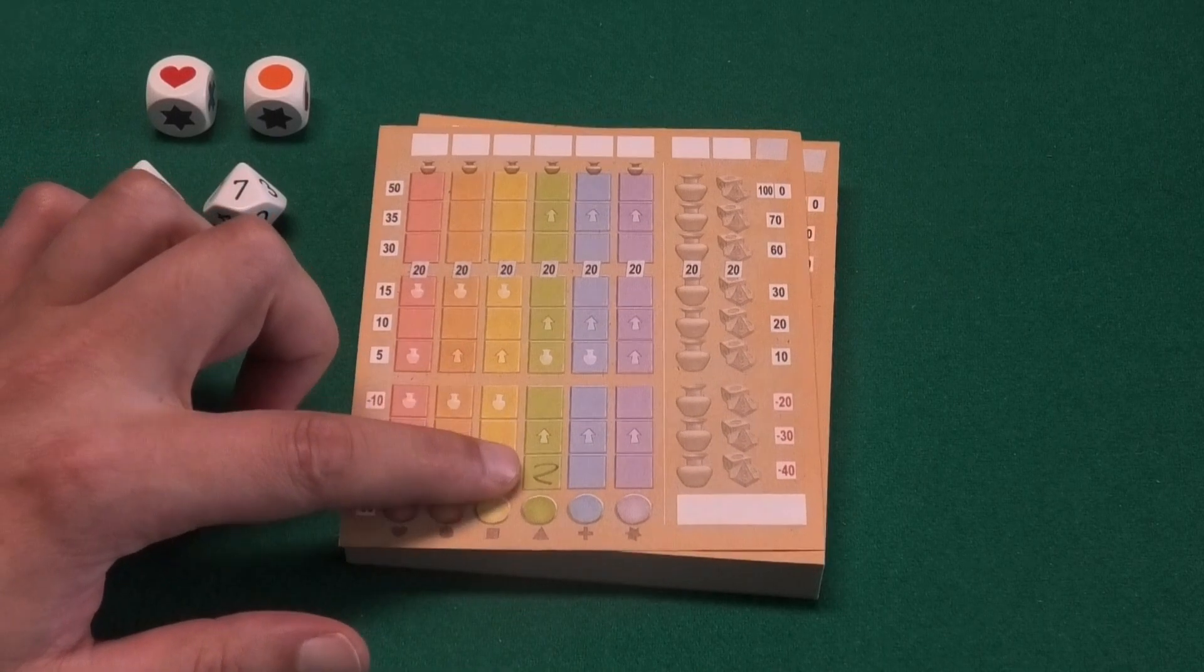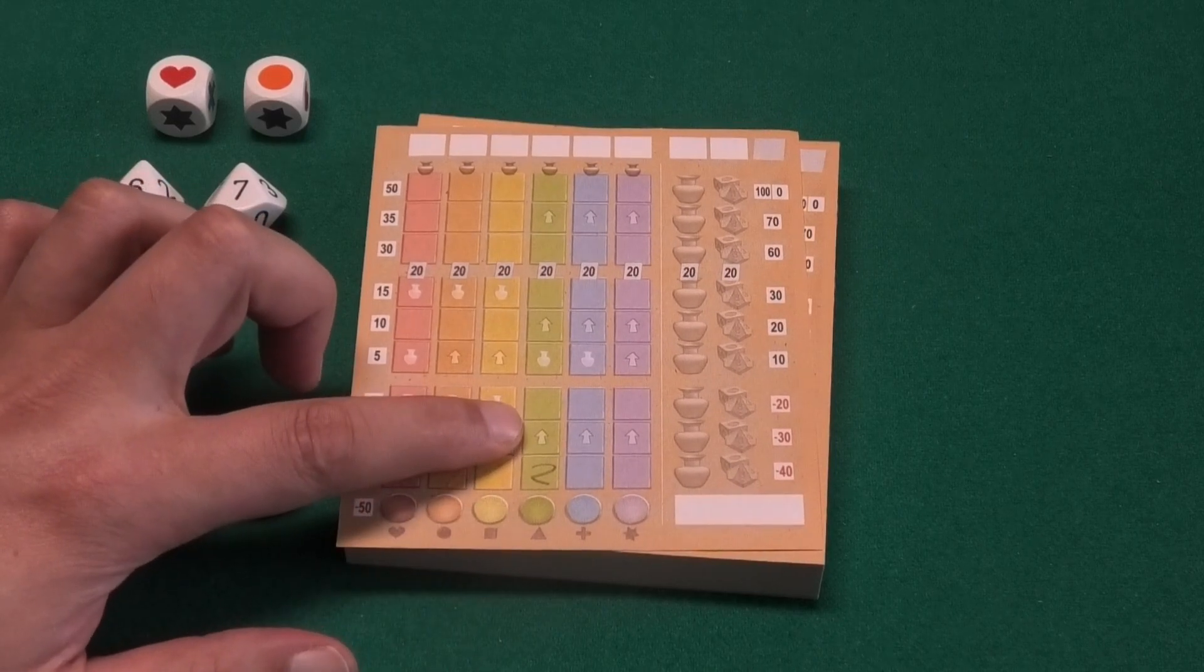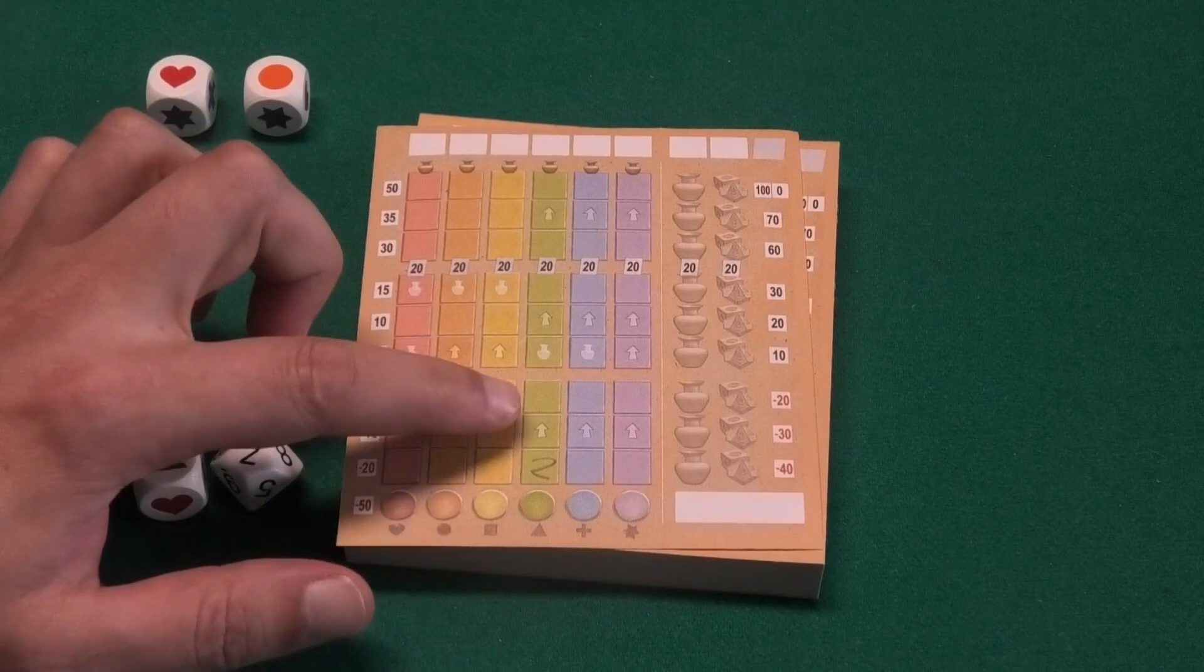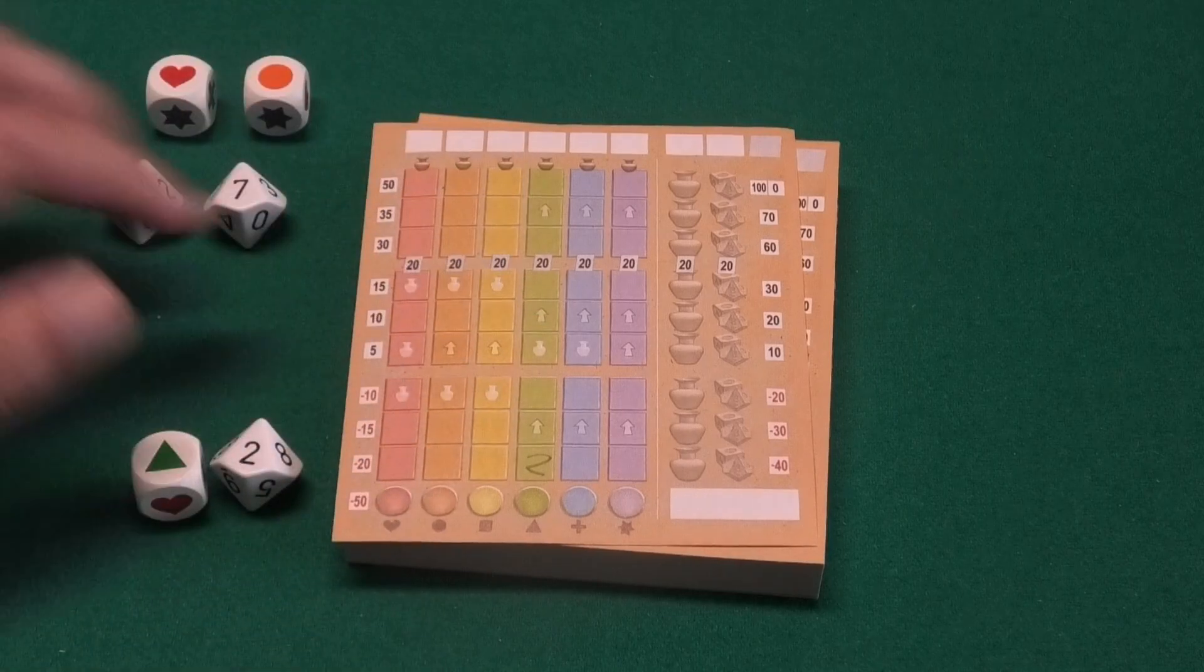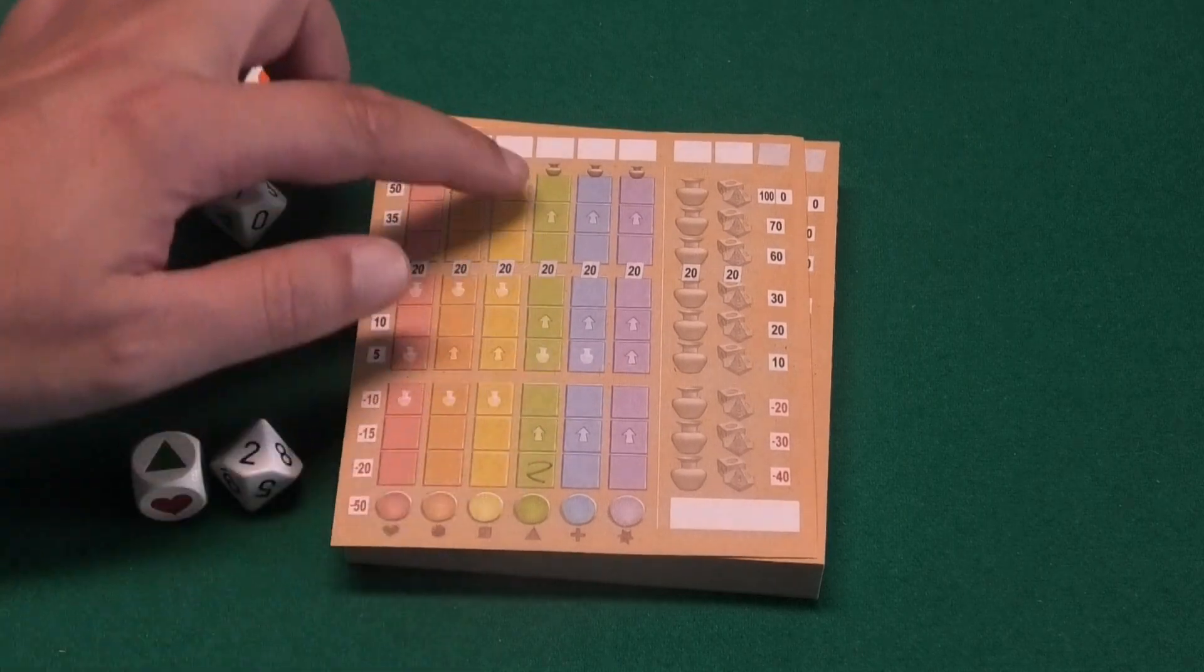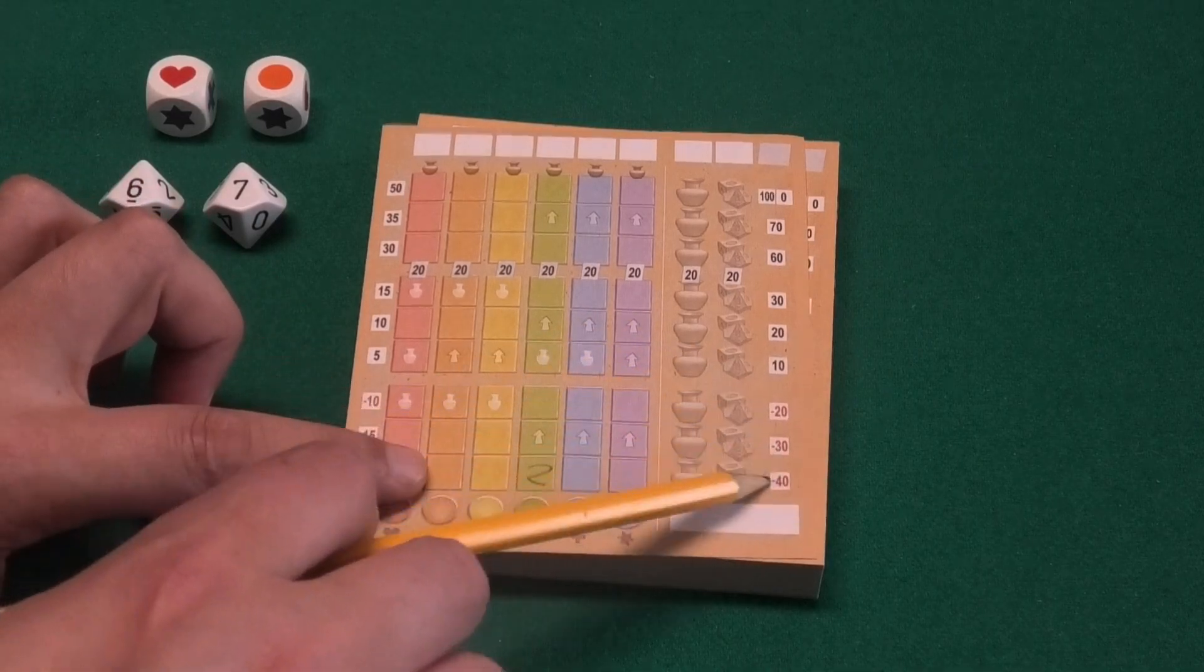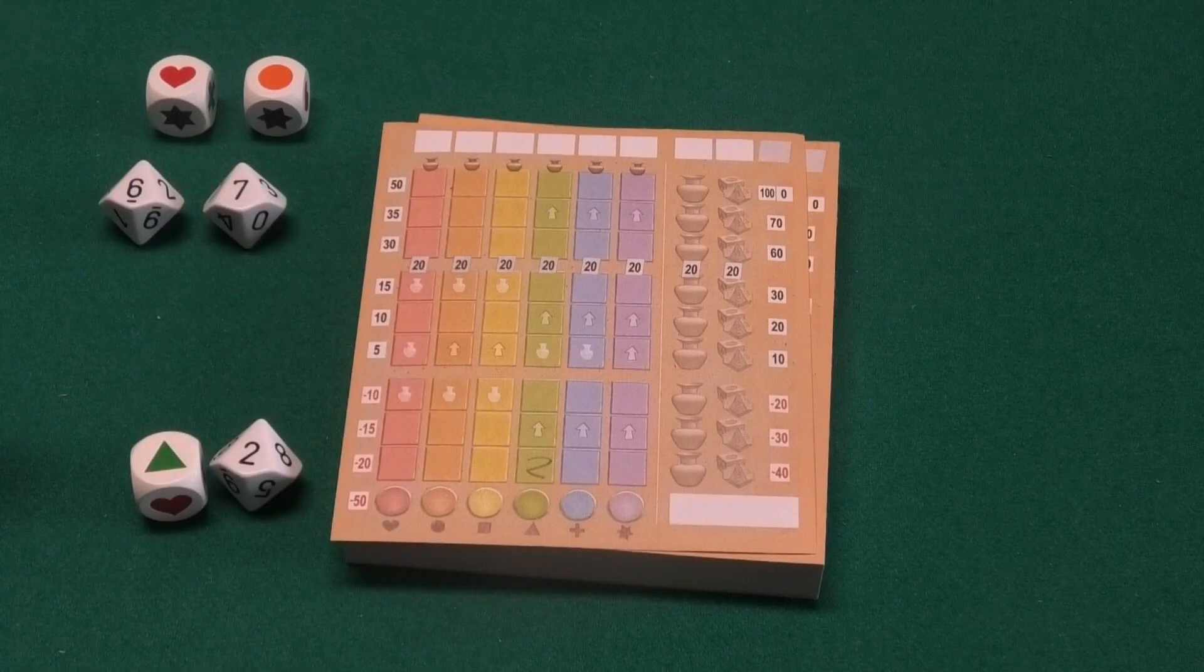From now on, the next number I will write down here has to be equal or higher than the number before. So I can put another two over here or a higher number. But as you will understand, the lower you keep the number for as long as possible, the more options you will have to complete your expedition or at least get in the bonus points. Because at the end of the game you will score minus points if you didn't get past the first three boxes.